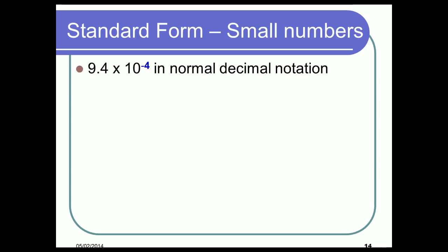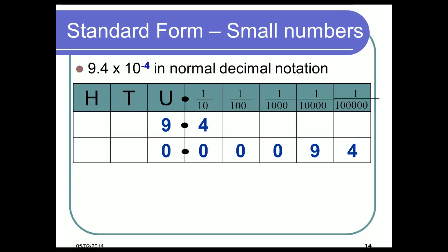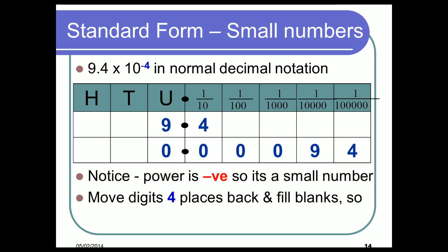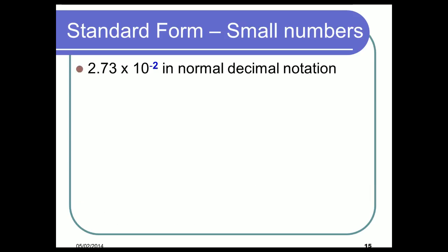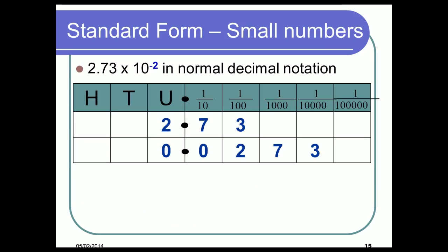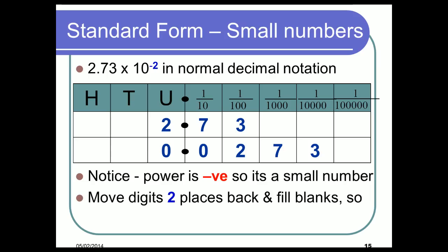What about doing it the other way? 9.4 × 10⁻⁴ in normal decimal notation — start with 9.4 and go back 1, 2, 3, 4 places. Fill the humps with zeros and you'd get 0.00094. Similarly, 2.73 × 10⁻² — move it back two spots and you get 0.0273.